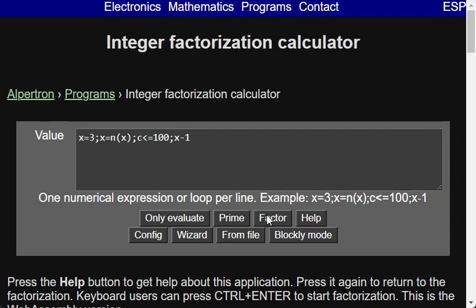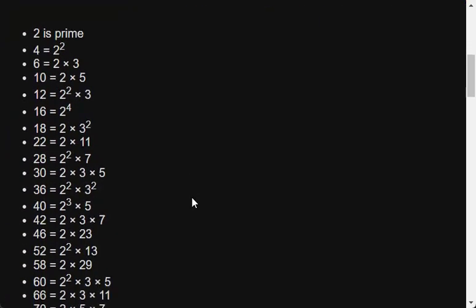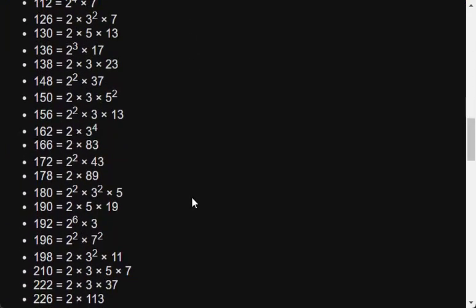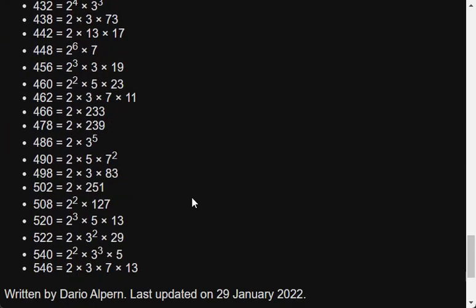Instead of pressing the factor button you could press the only evaluate button just to print the numbers that were calculated, or the prime button which shows whether the numbers are prime or not instead of giving a complete factorization.